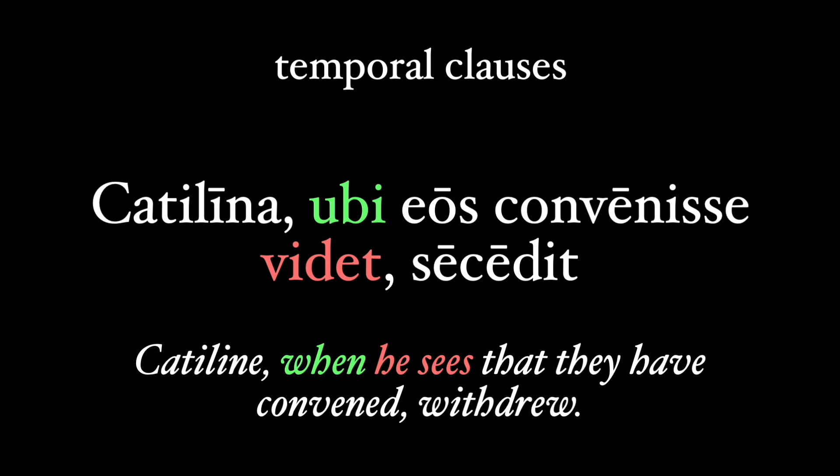And this one is from Sallust. Catilina, ubi eos convenisse videt, se cadit — 'Catiline, that revolutionary who opposed Cicero, when he sees that they have convened, withdrew.' Note that the subject of the main verb, if it's the same as the subject in the postquam or ubi clause, often will come first before the clause rather than inside it.